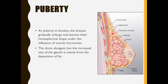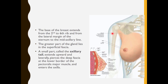The base of the breast extends from the second rib to the sixth rib, and from the lateral margin of the sternum to the mid-axillary line. The greater part of the gland lies in the superficial fascia. A small part called the axillary tail extends upwards and laterally, pierces the deep fascia at the lower border of the pectoralis major muscle, and enters the axilla.